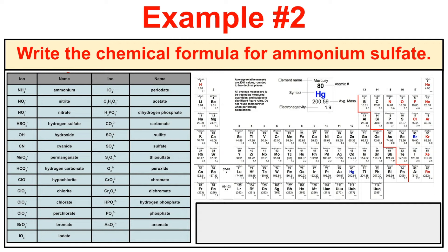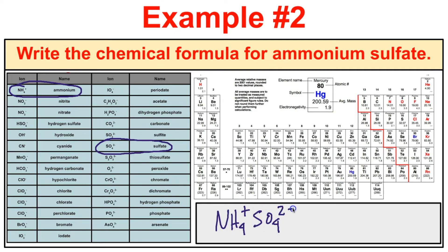Write the chemical formula for ammonium sulfate. Ammonium is NH4 with a +1 charge, and sulfate is SO4 with a 2- charge. These don't add up to zero, so we need two ammonium ions. Two times +1 is +2, which cancels the -2 of sulfate. The correct chemical formula is (NH4)2SO4.